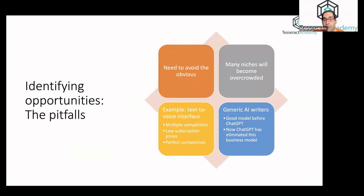Many niches will become overcrowded. A very good example is generic AI writers. Generic AI writers used to be a very good model before ChatGPT, but now ChatGPT has eliminated the need for this type of business model. Obviously, all these companies are going to disappear or most of them.